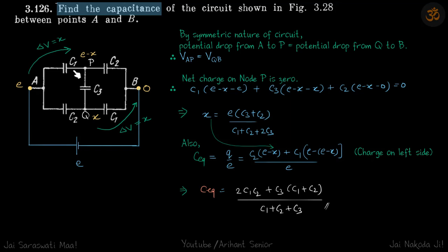We can use one equation because there is some symmetry in the circuit. This is C1, this is also C1, and this is C2 just as this. In between, we only have C3 which is different. Otherwise, the circuit is anti-symmetric.